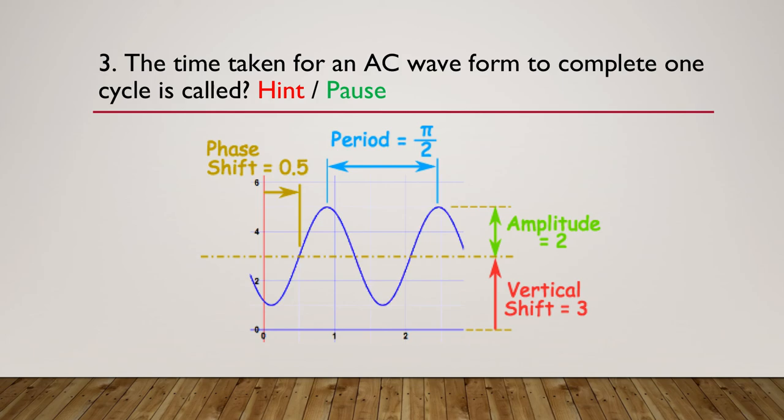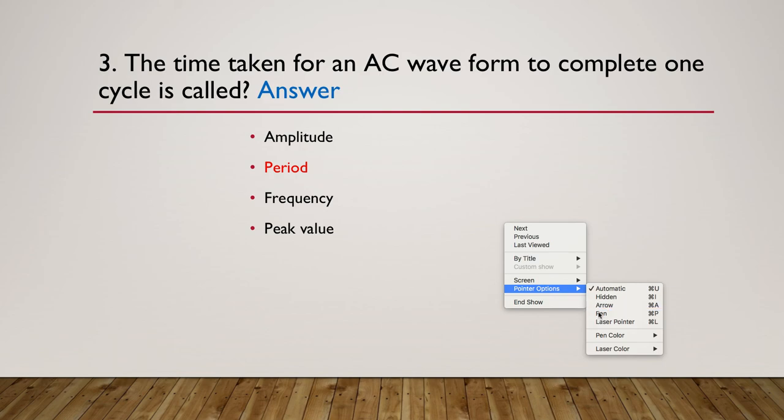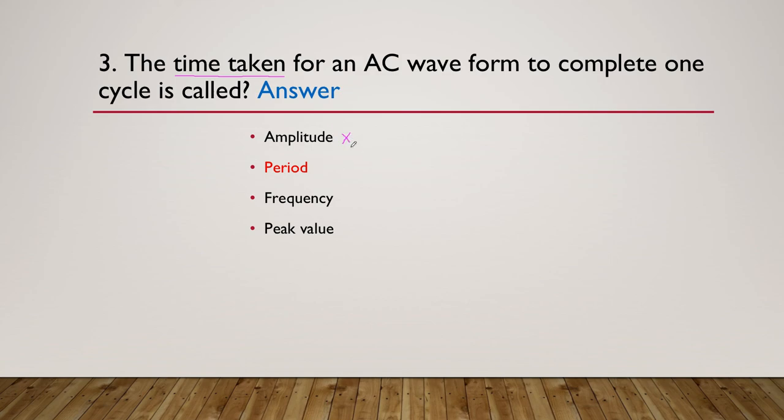So the answer is the period of the wave. So the hint there was the time taken. So the words 'time' should have been a hint to what was going on. So I'll just underline that time taken. Amplitude has nothing to do with time. The peak value has nothing to do with time. So we could have eliminated those points. And the ones that do have to do with time, so frequency was to do with time and period. So frequency is the number of times we go through a period in one second, but to go from one complete cycle, it's just called the period.